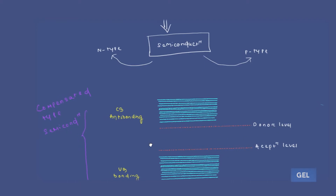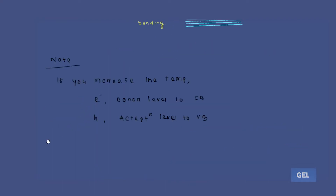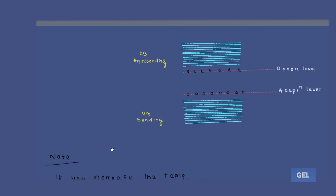So we can clearly see here we have two kinds of levels: donor energy level and also acceptor energy level. From this we get a very special kind of semiconductor — we call it a compensated type semiconductor.